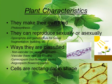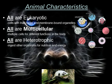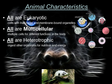Plant cells are also rectangular in shape. The major characteristics that identify animals are: all animals are eukaryotic, which means they have true nuclei and membrane-bound organelles. All are multicellular. All animals are heterotrophic, which means that they ingest other organisms for nutrition and energy.